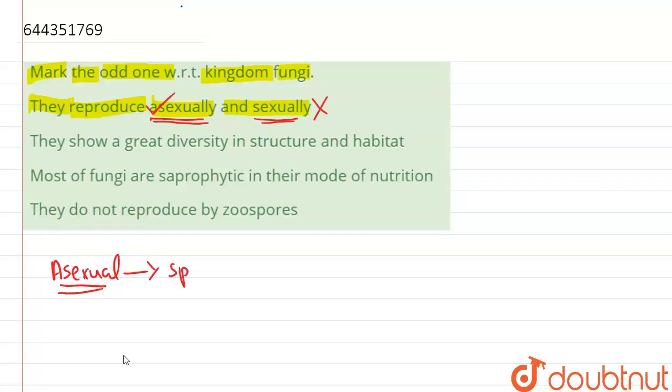Spores are the agents which can germinate and they are always formed. Some of the spores which are present in fungi, the very first spore we have is sporangiospores.